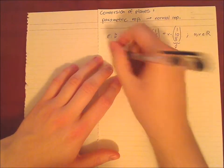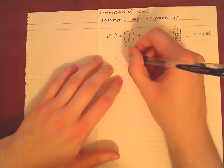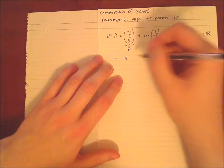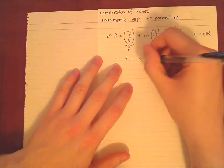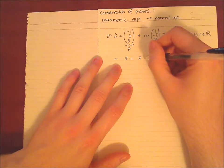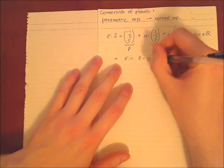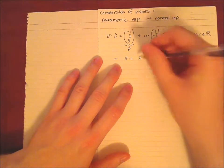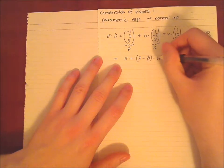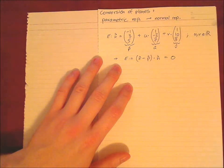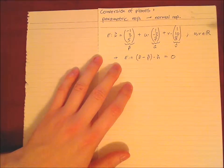Now what do we want to achieve? We want to have the normal representation, which is the following. So we also have E, this time (x - p), so this is the support vector of the plane, and then we need to multiply with the normal vector n, and then equals zero.